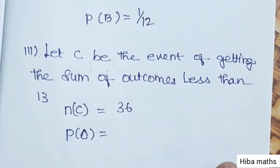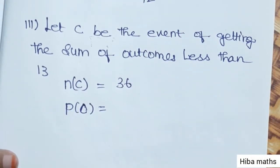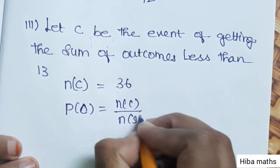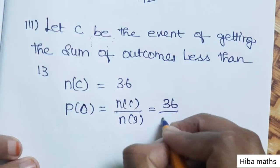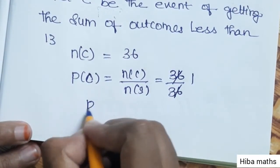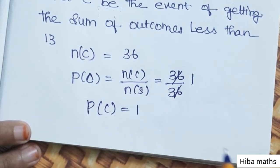So all 36 outcomes are less than 13. Therefore n(C) = 36. P(C) = n(C) / n(S) = 36 / 36, so P(C) = 1.